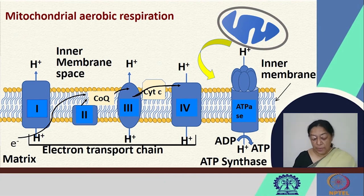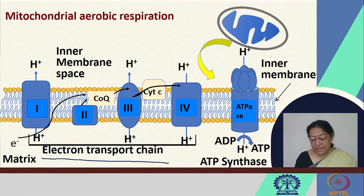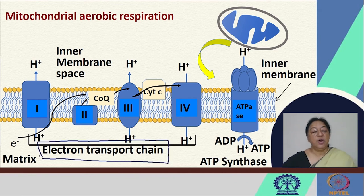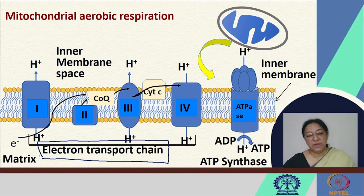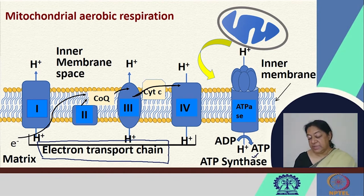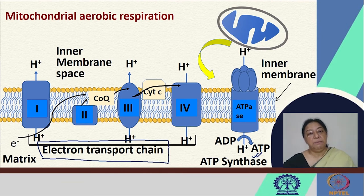We return to our complex system where the electron transport chain is comprised of four complexes — complex 1, 2, 3, and 4 — and finally ATP synthase that generates the ATP, all embedded as membrane proteins in the inner membrane of the mitochondria.